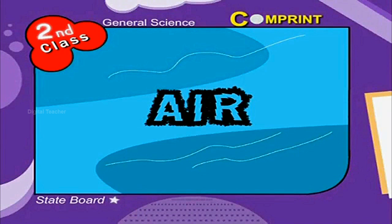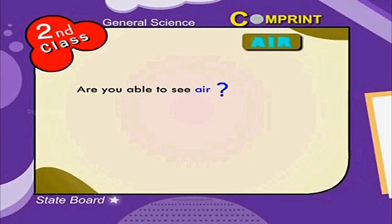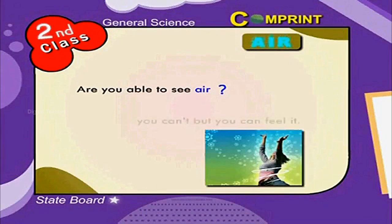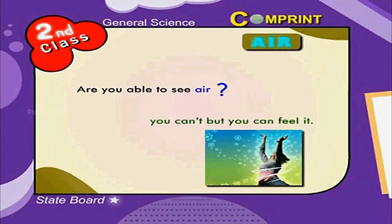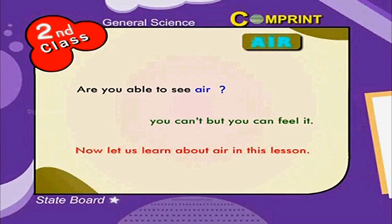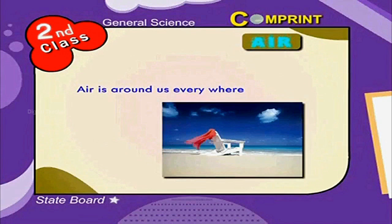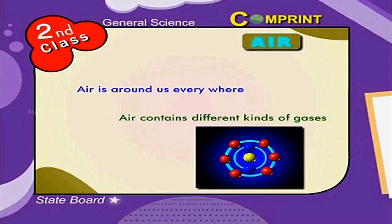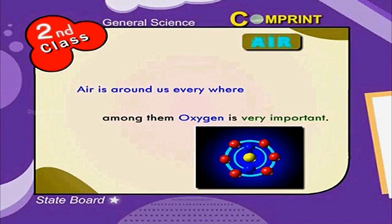Air is around us. Children, are you able to see air? You can't, but you can feel it. Now let us learn about air in this lesson. Air is around us everywhere. Air contains different kinds of gases; among them, oxygen is very important.